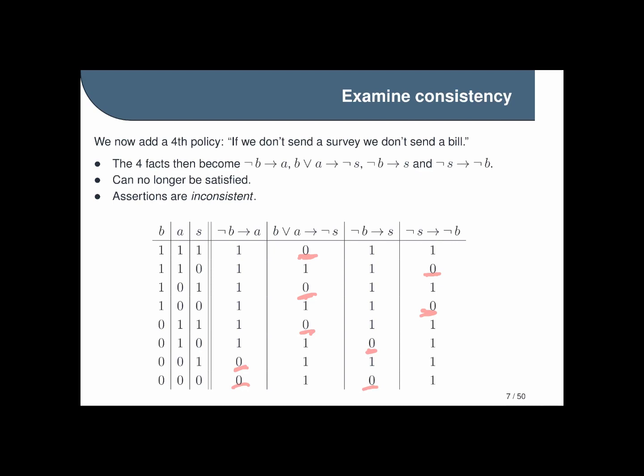Now another thing you might have noticed during the course of this example is that our truth table suggests our original three statements are considerably more complicated than they need to be, and in fact we could write them more succinctly simply as b and not s since this produces an equivalent constraint.